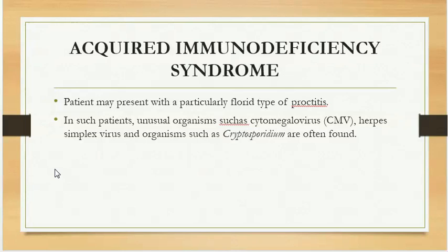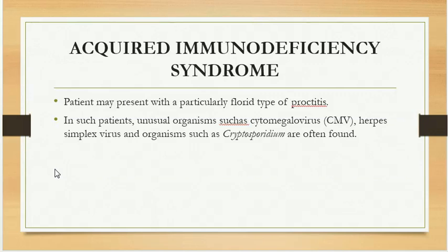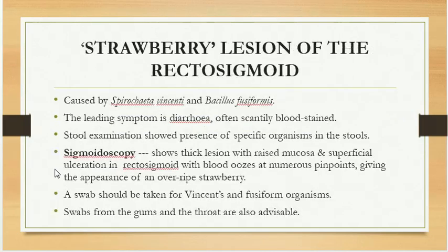HIV infection and acquired immune deficiency syndrome may also be associated with proctitis. Patients may present with a particularly florid type of proctitis. In such patients, unusual organisms such as cytomegalovirus (CMV), herpes simplex virus, and cryptosporidium are often found and are the cause of proctitis in HIV infection.